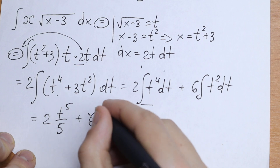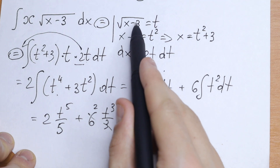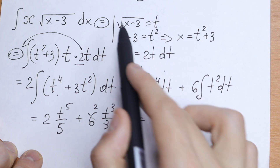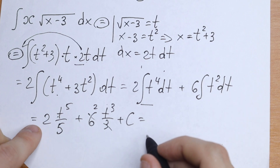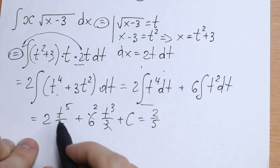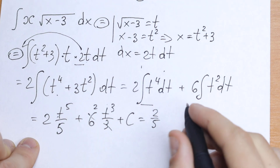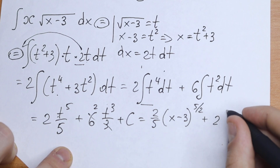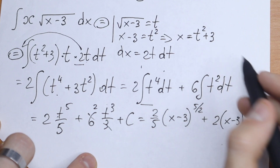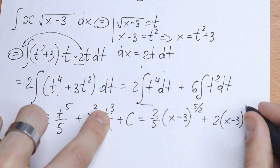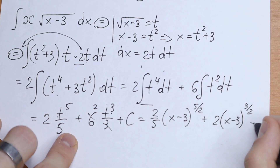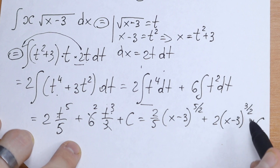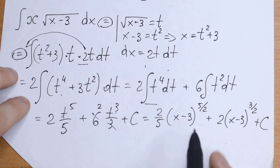Simplifying and substituting back — replacing t with the square root of x minus 3 — our final answer is 2 over 5 times (x minus 3) to the power 5/2, plus 2 times (x minus 3) to the power 3/2, plus C. We can also write these as the square root of (x minus 3) raised to the fifth and third powers respectively.